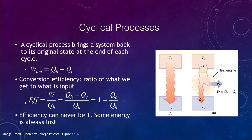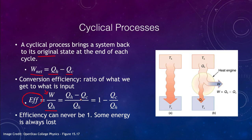In a cyclical process the system returns to its original state at the end of each cycle, and there is a net amount of work done equal to the heat produced minus the heat that is expelled. The efficiency is the work divided by Q sub H. We can also write this as efficiency equals one minus QC over QH — the smaller QC is, the higher the efficiency. If QC were zero the efficiency would be one, but efficiency can never actually reach one.